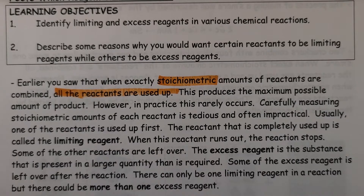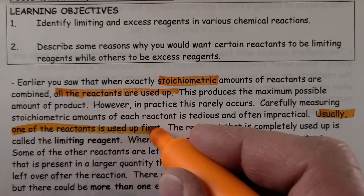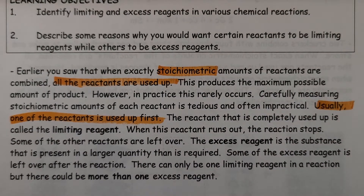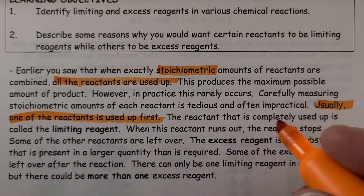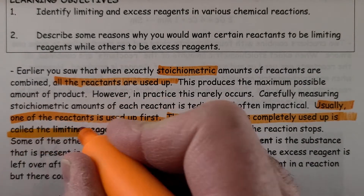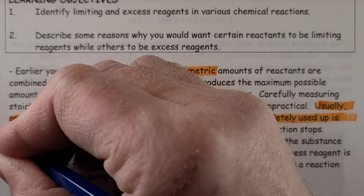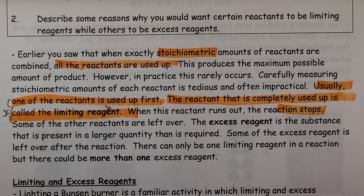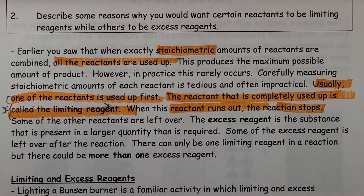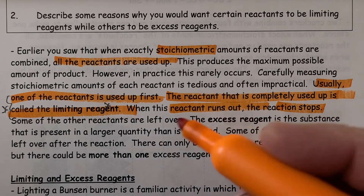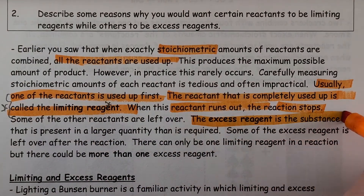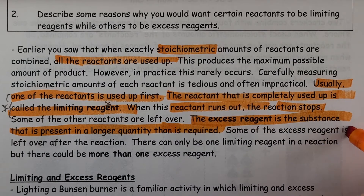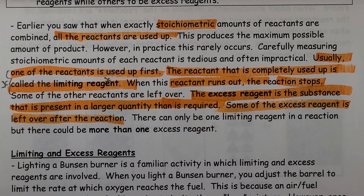Usually, one of the reactants is used up first. In most reactions, one thing is going to get used up, but you can control which one gets used up by having extra of the other substance it's reacting with. The reactant that is completely used up is called the limiting reagent — that's worth a star. When this reactant runs out, the reaction stops. Some of the other reactant is left over. Therefore, the excess reagent is the substance present in a larger amount than required, and it will be left over after the reaction is over.